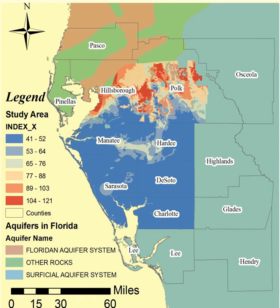GIS is used in making spatial interpolations of contaminants in the soil and water. Spatial interpolation allows for a more efficient approach to remediation and monitoring of soil and water contaminants.